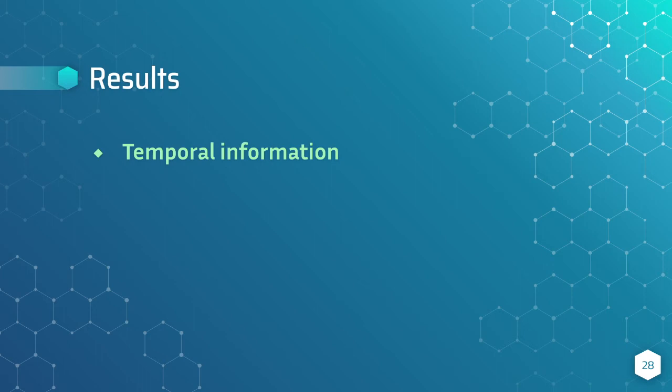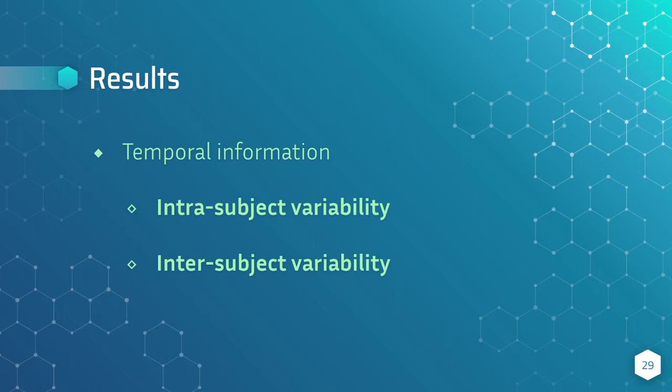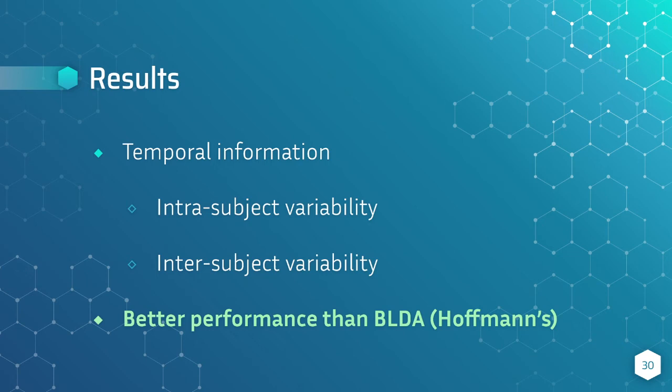Now, I begin with the results. With our experiments, we can extract some temporal information about the signal, just by looking at the obtained score with some offset and window size. With this, we can directly analyze a single user and its intra-variability between sessions, and also compare the eight different users and their inter-variability. Finally, it is important to mention that we improve the performance obtained by Hoffman's model, the Bayesian linear discriminant analysis, which is also a good point.